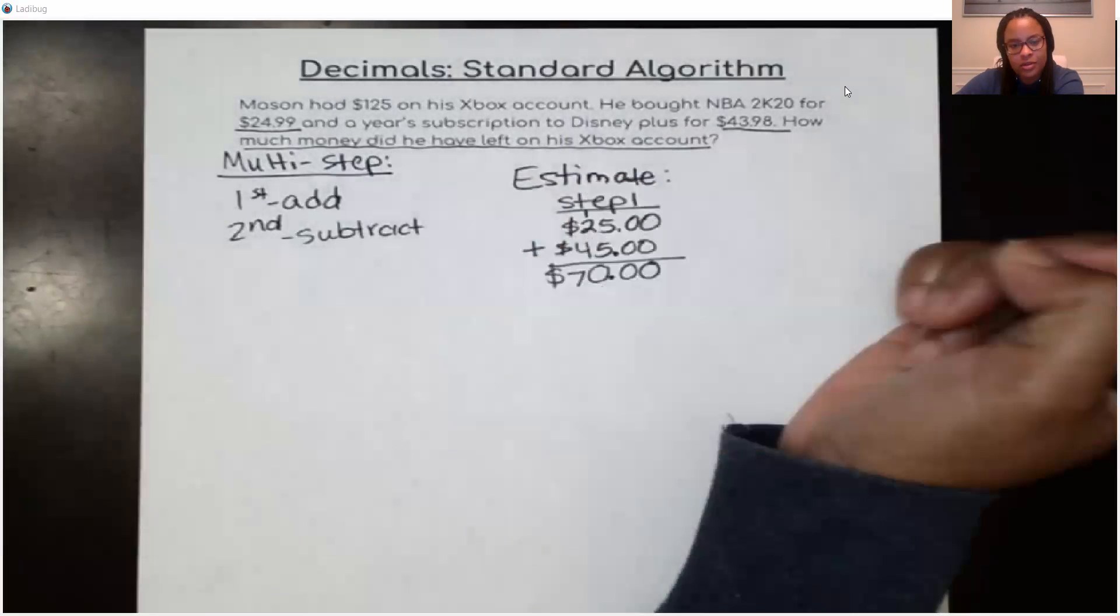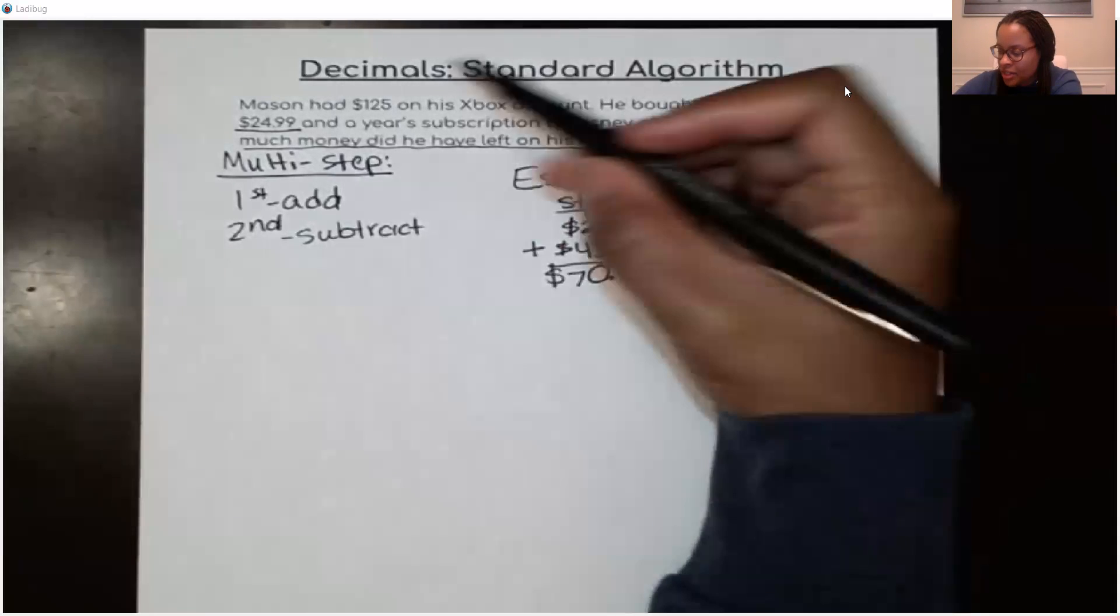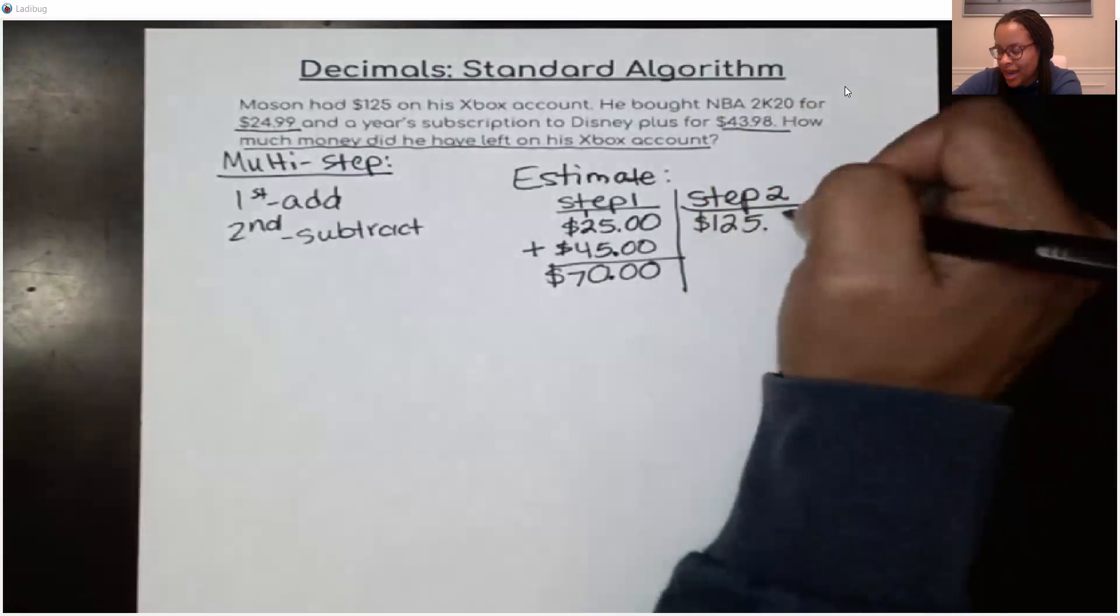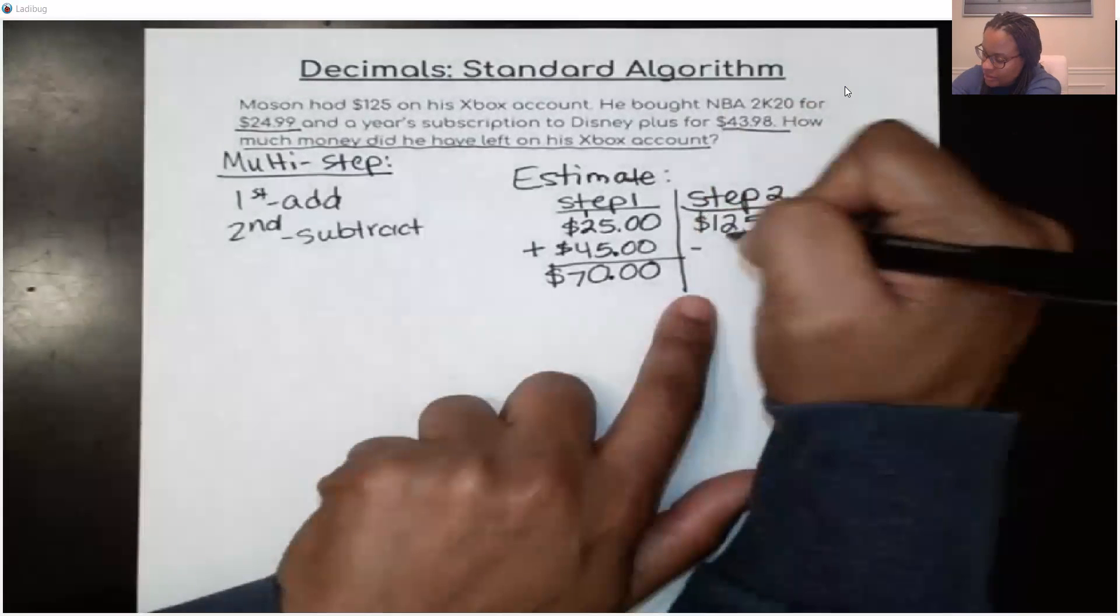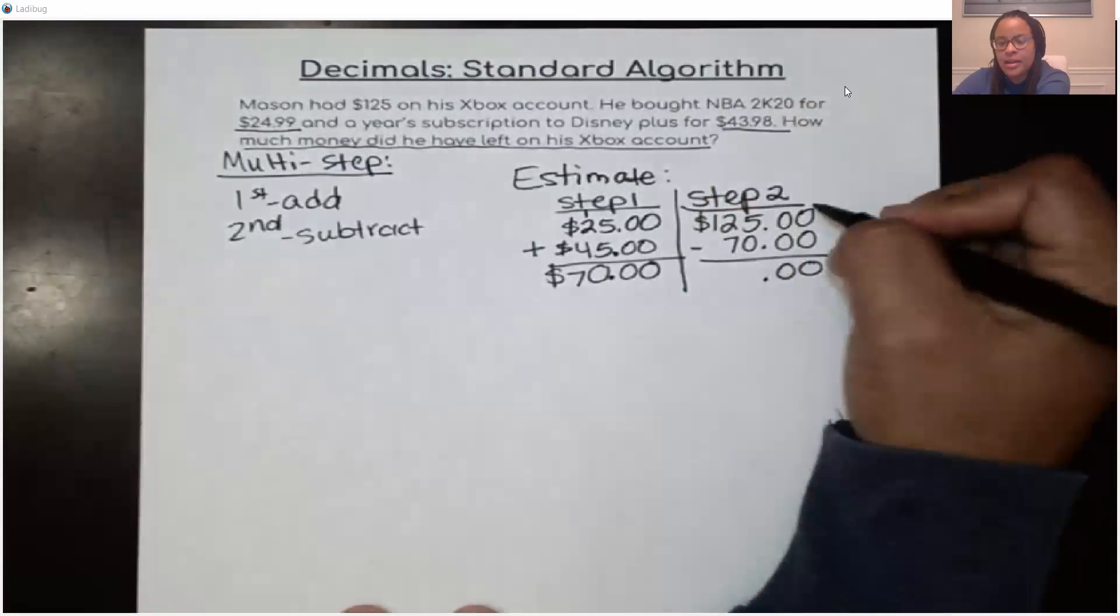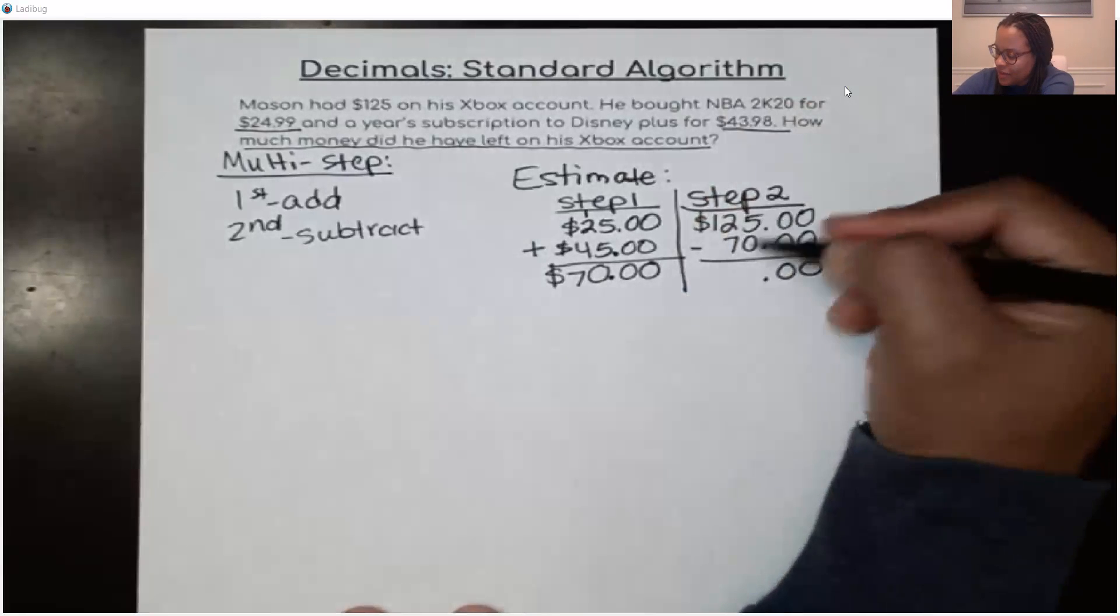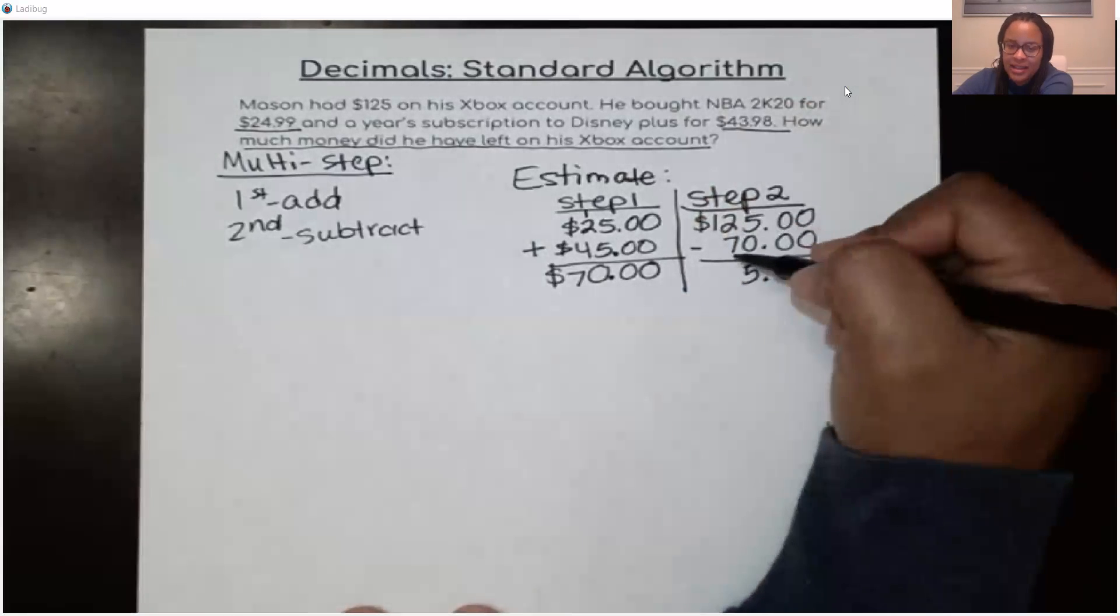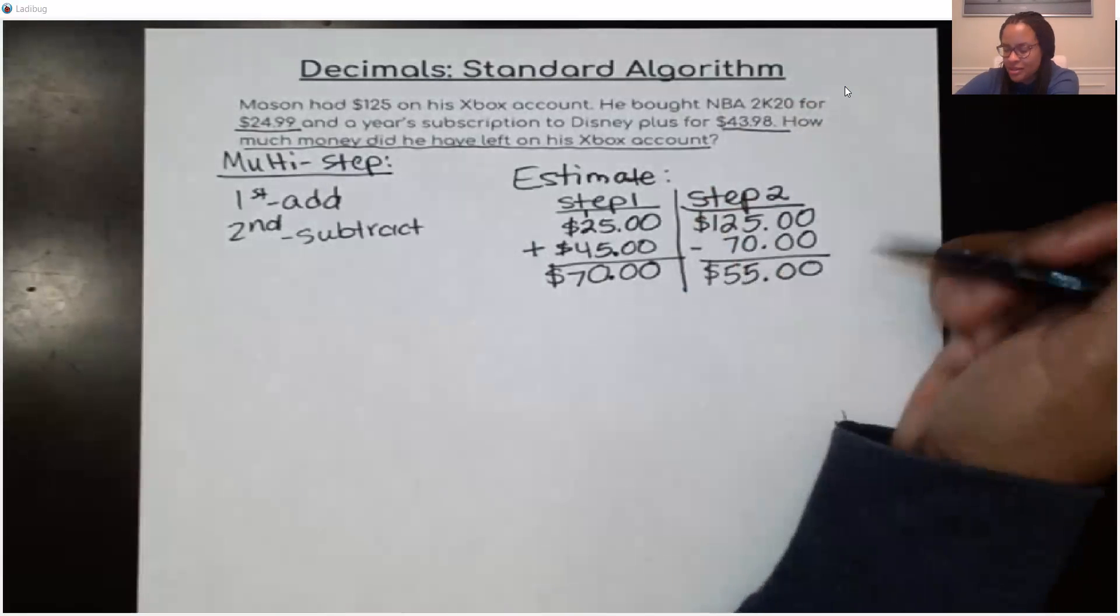And then I'm going to also include my dollar sign. And I'm going to go ahead and figure out what's step 2 if I estimate $125. I'm going to start with that amount because I am subtracting 70 from the $125. And if I do that, I'm bringing my zeros down. I'm lining up my decimals. And then 5 minus 0 is 0. 12 minus 7 is 5. So that's $55. So that's going to be my estimate.